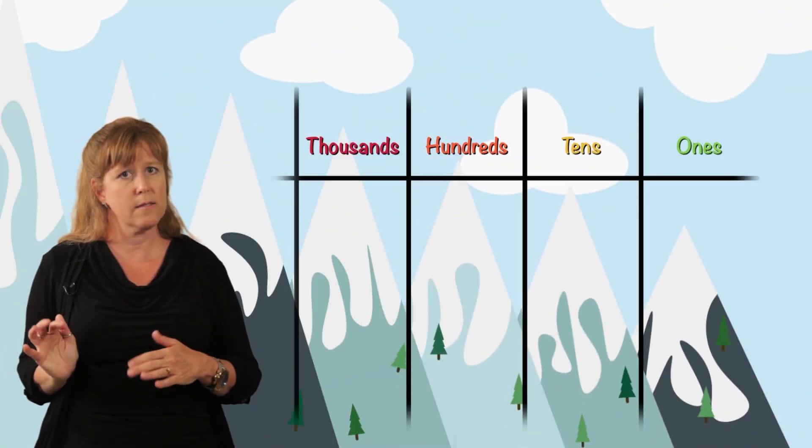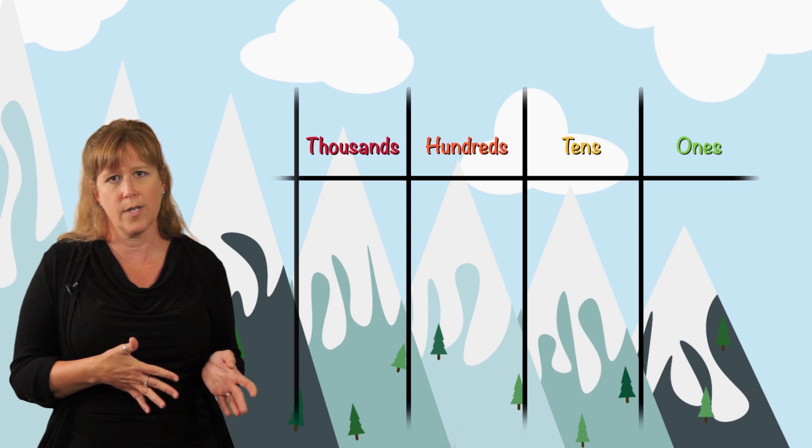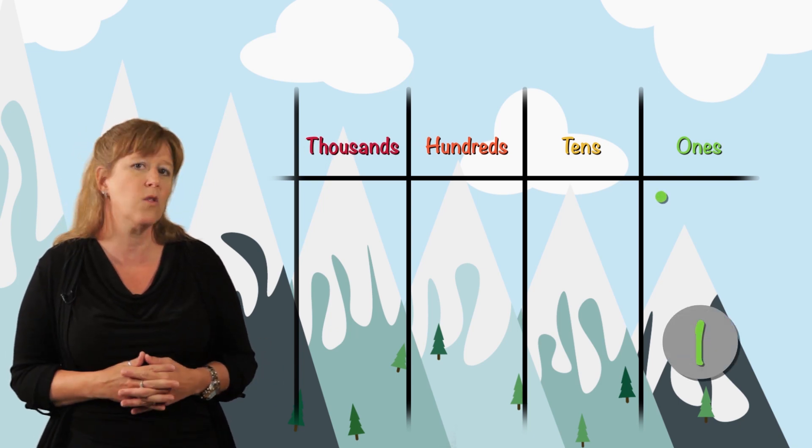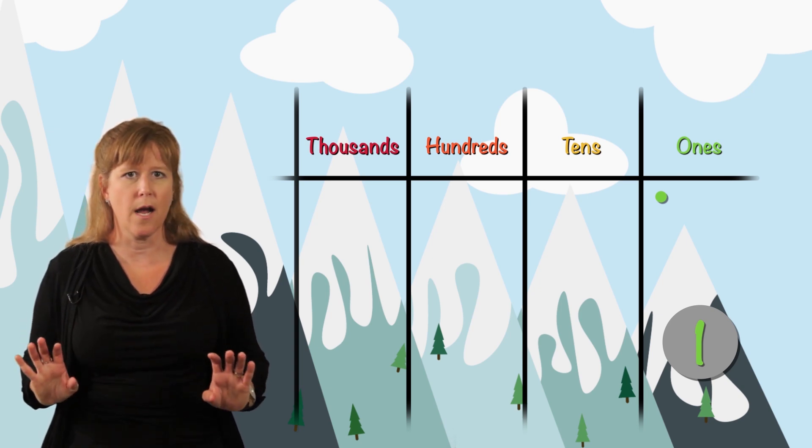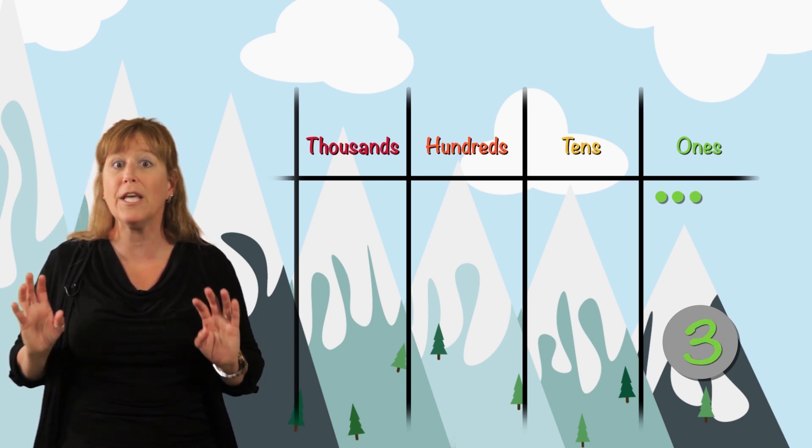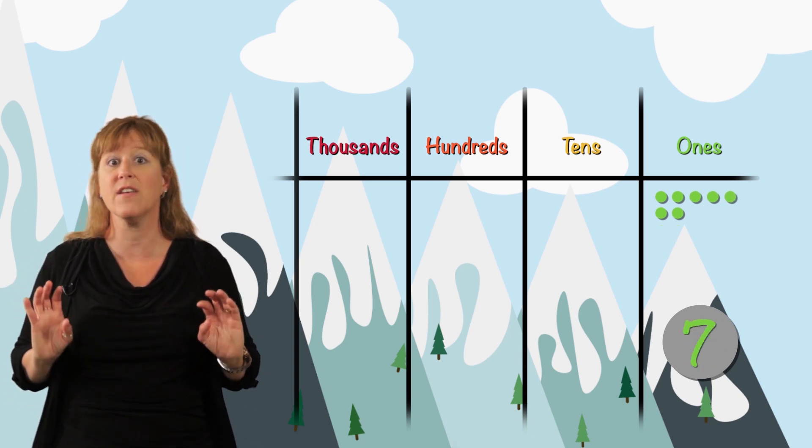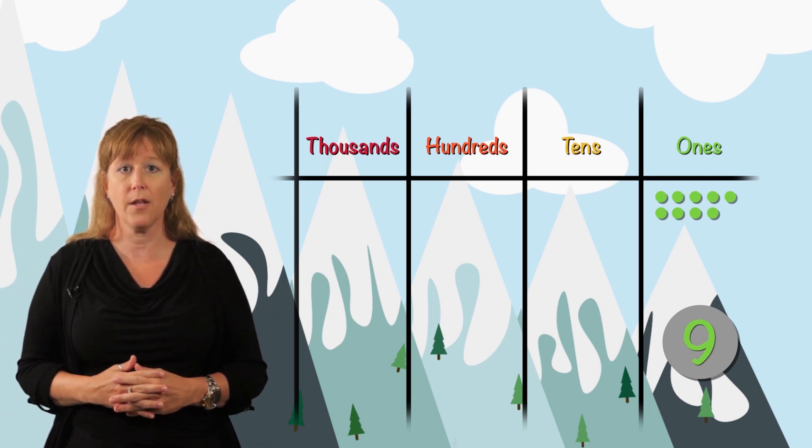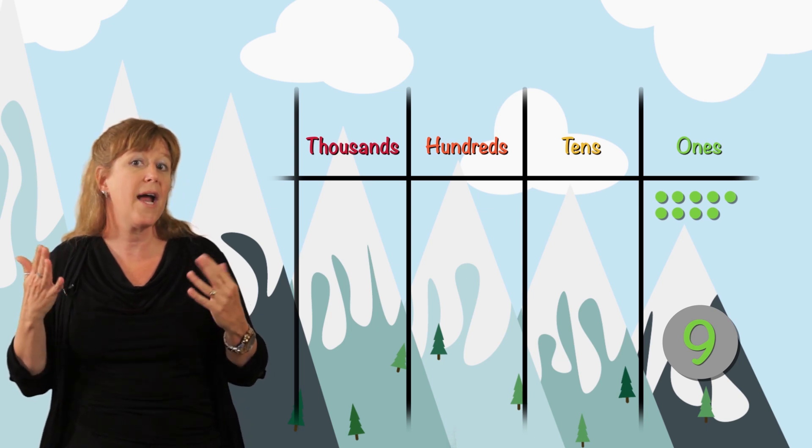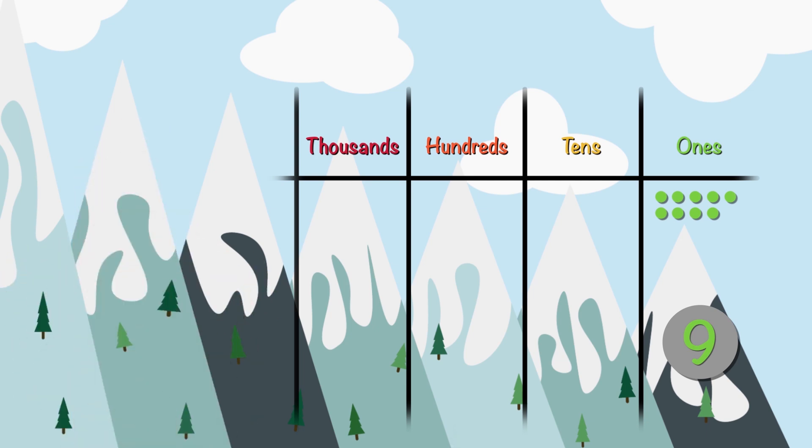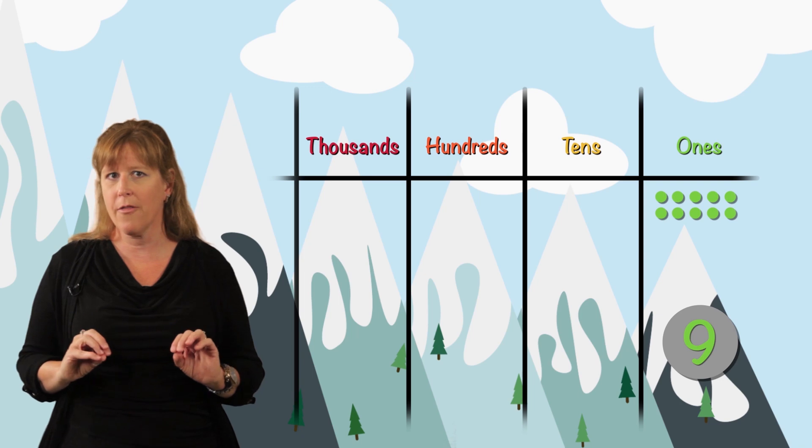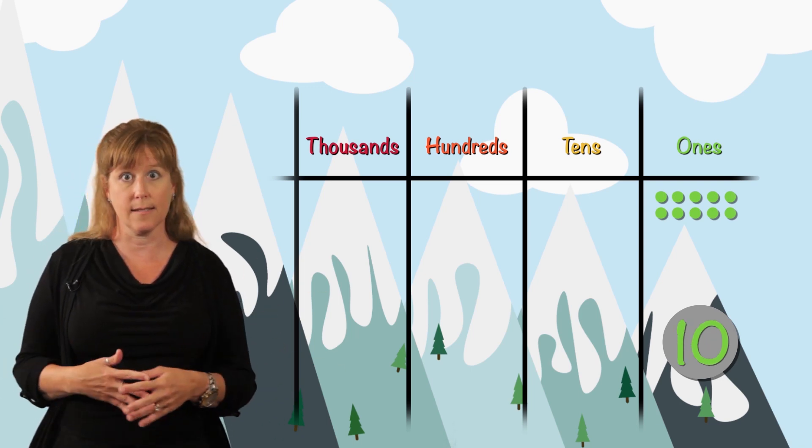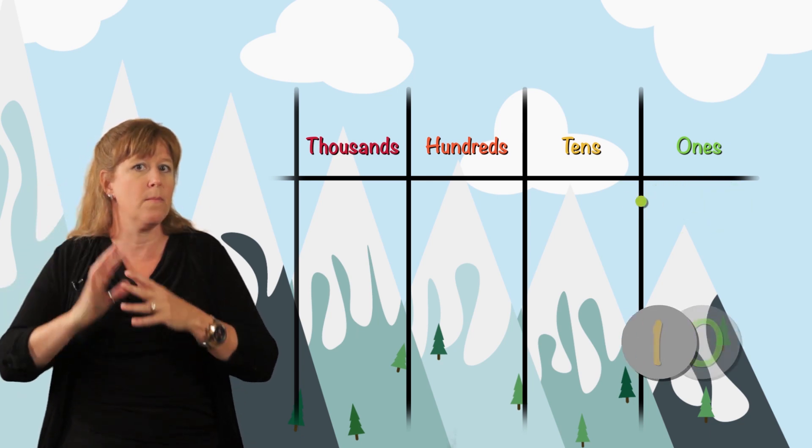So here we are with ones, tens, hundreds, and thousands. We'll start by placing one in the ones column. Now let's begin counting up. One, two, three, four, five, six, seven, eight, nine. Stop! Okay, here's nine in the place value chart. But what happens when we add one more disk? When we add another disk, we get ten. And when we have ten disks, we can bundle and move them on.